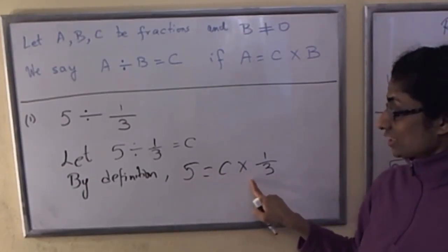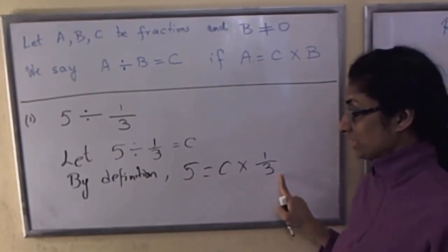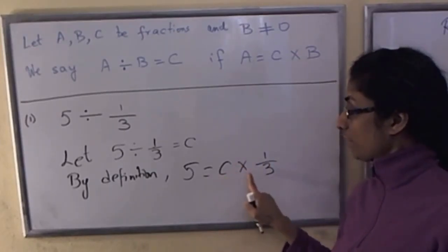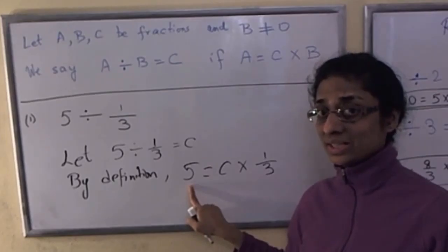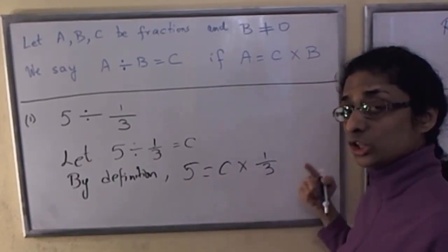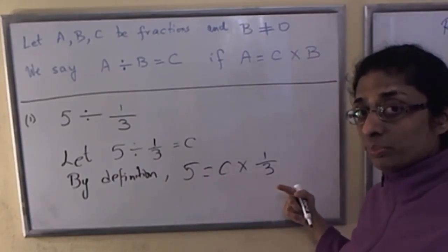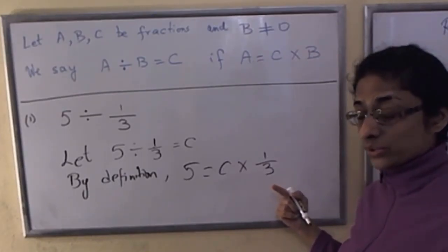This expression can also be interpreted as c copies of 1 third equals 5. And what is that c? This one, you can do the computation using logic as follows.